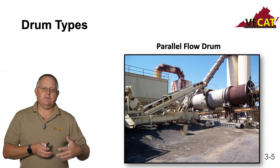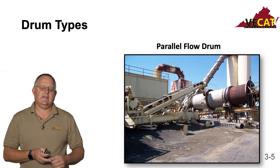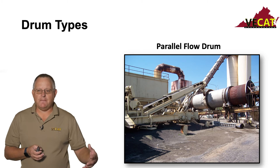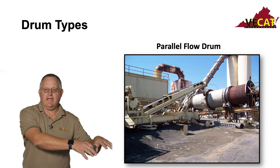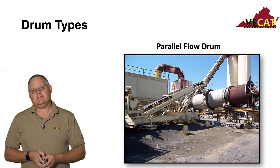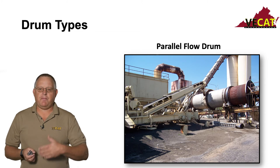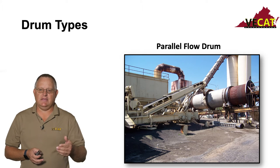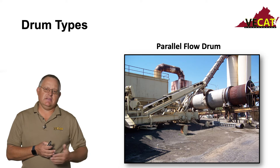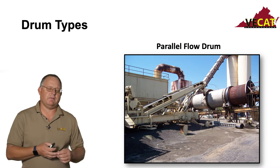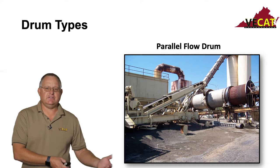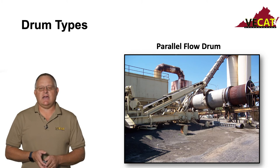Parallel flow means the rock and the flame go in the same direction. The aggregate goes in the upper end and works its way down with the flame. The hot elevator at the very bottom is where the finished mix comes out and is elevated up to the silos. In a parallel flow plant, you can also see where the RAP comes in at the RAP collar — you don't want the RAP exposed to the heat or you'll have smoking issues and oxidize the binder. So we introduce the RAP lower in the drum where it mixes with heat transfer.